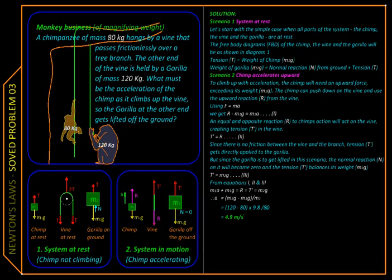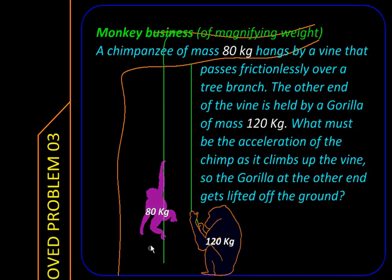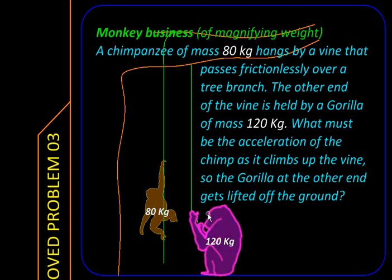In this problem we have been given a chimp of mass 80 kg hanging by a vine which is passing frictionlessly over a branch of a tree, and the other end of that vine is held by a gorilla of mass 120 kg. We need to find how fast must the chimp accelerate up the vine so that the gorilla at the other end gets lifted off the ground.